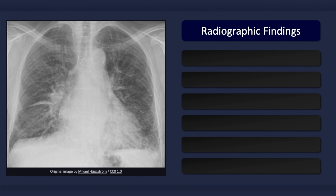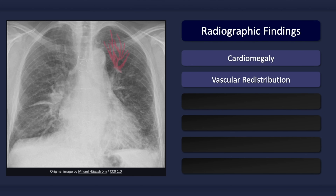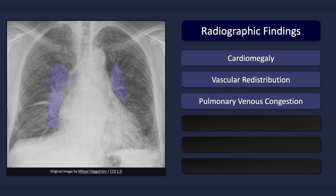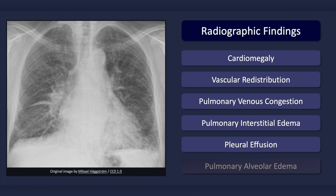Congestive heart failure can produce a myriad of findings on plain chest radiography. Which findings are present depends on the severity of the patient's condition. On an erect posterior-anterior chest X-ray, suggested findings include cardiomegaly — which does not necessarily need to be present — vascular redistribution (the cephalization of blood flow), pulmonary venous congestion, pulmonary interstitial edema, pleural effusions, and in more severe disease, alveolar edema, which is not clearly evident on this radiograph.